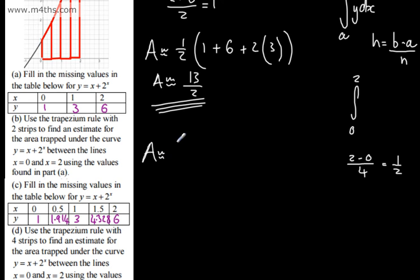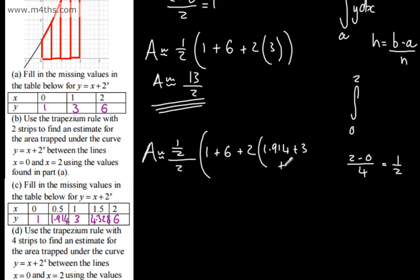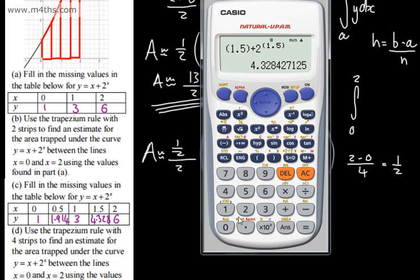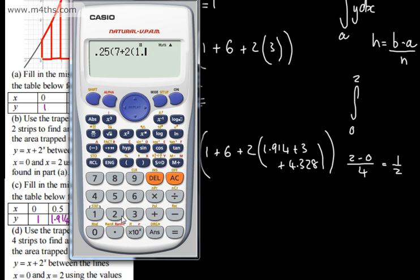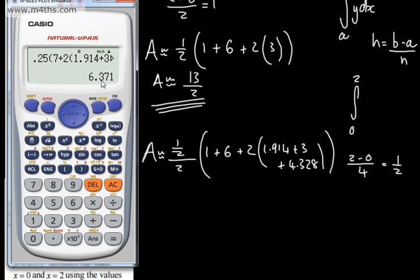So the area is approximately equal to h over 2, which is 1 half over 2. Then we have the first value 1, plus the last value 6, plus 2 lots of the middle values: 1.914, plus 3, plus 4.328. This gives 0.25 multiplied by 7 plus 2 times 9.242, equalling approximately 6.371.